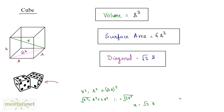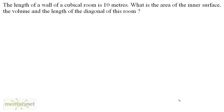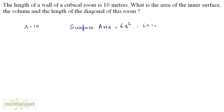You need to memorize these formulas in order to solve problems. Let us solve a problem now. The question is: the length of a wall of a cubical room is 10 meters. What is the area of the inner surface, the volume, and the length of the diagonal of this room? The side s = 10. The surface area equals 6 times the side squared, that's 6 × 10² = 6 × 100 = 600 square meters.